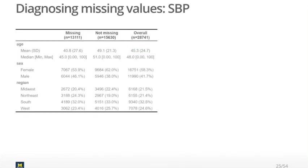When we use that code, we get this very nice, concise Table1. We can see that approximately 13,000 people have a missing value for systolic blood pressure, and about 15,000 people have a value present. When we look at the breakdown of age, we can see that people who have missing values tend to have a lower age — the mean age is 40.8 in people with a missing blood pressure, compared to 49.1 in people with blood pressure documented.